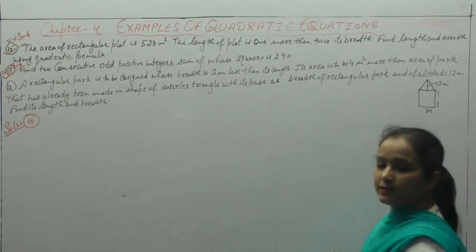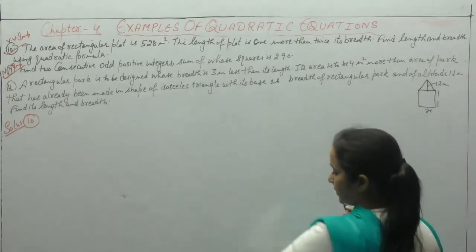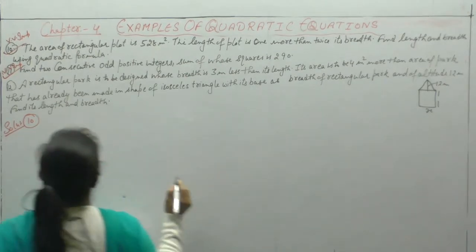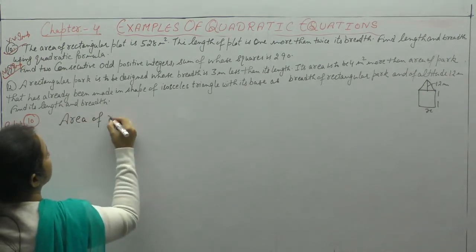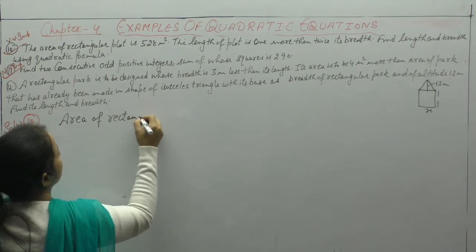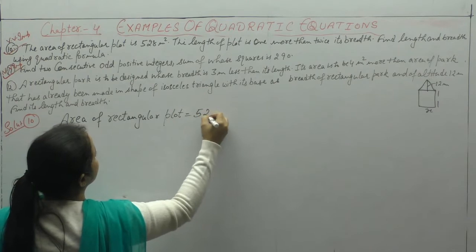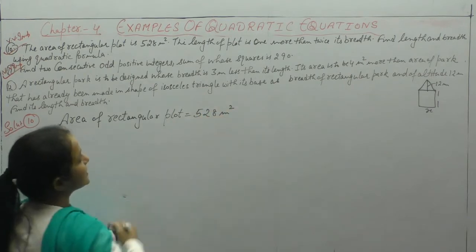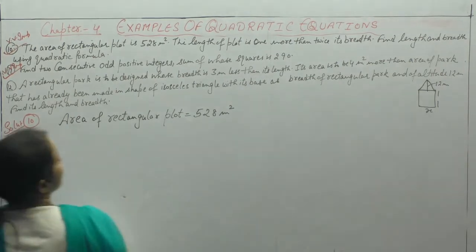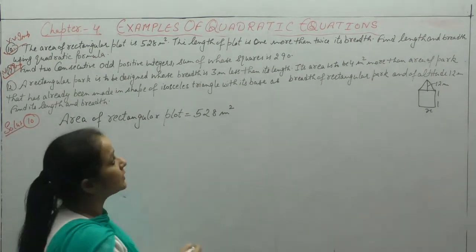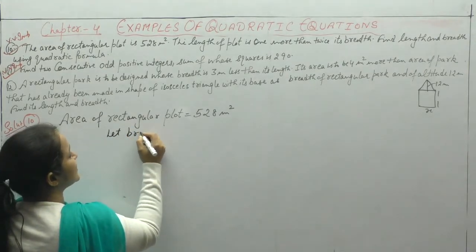Now next question, question number 10. The area of a rectangular plot is 528 meter square. If the length of a plot is 1 meter more than twice its breadth, let breadth be equal to x meters.